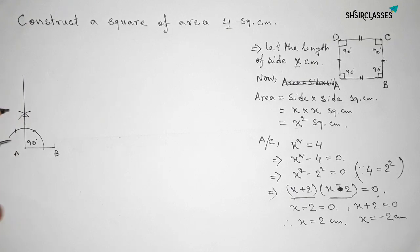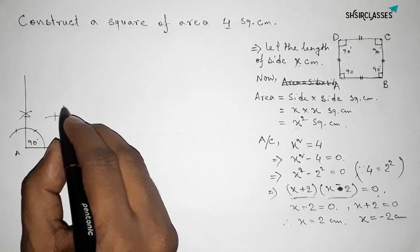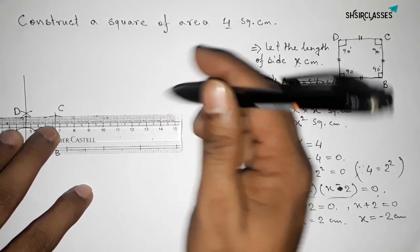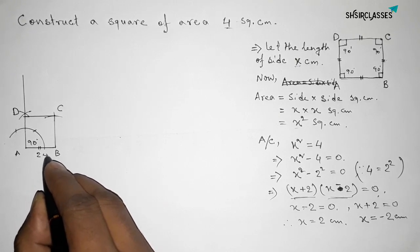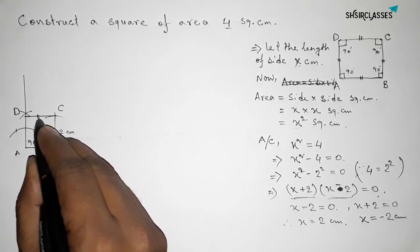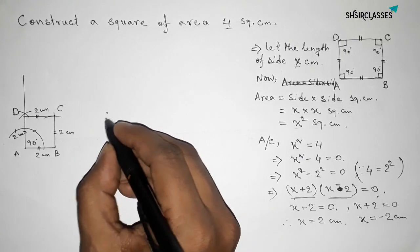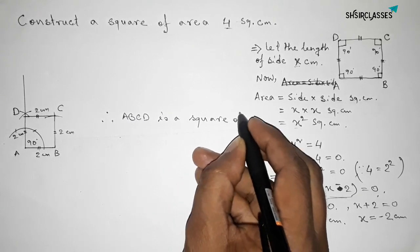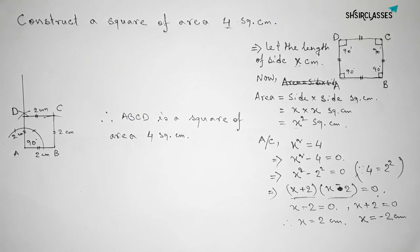Cut an arc at point D, then put the compass on point B and draw an arc. With the same length, put the compass and cut to get point C. Now join side BC and then join side CD to complete the square. We get square ABCD where all sides are equal and all sides are 2 centimeters. Therefore ABCD is a square of area 4 square centimeters. That's all — thanks for watching. If this video is helpful, please share it.